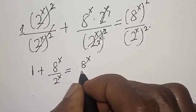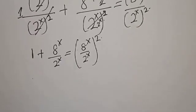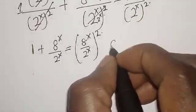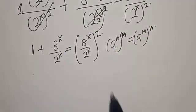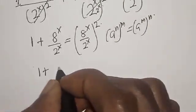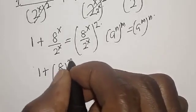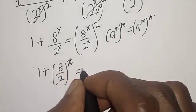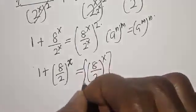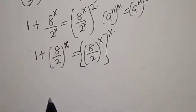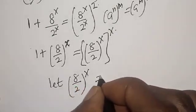1 plus 8 raised to power s over 2 raised to power s is equal to 8 over 2 raised to power s, all squared. Now we have 1 plus 8 over 2 all raised to power s is equal to y.